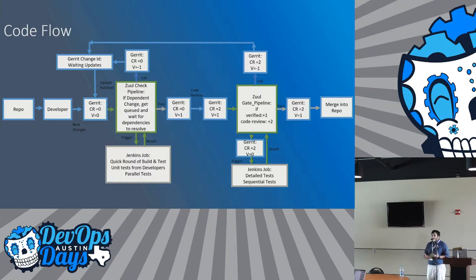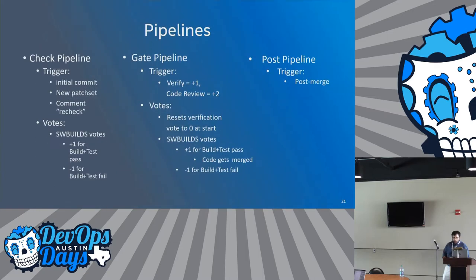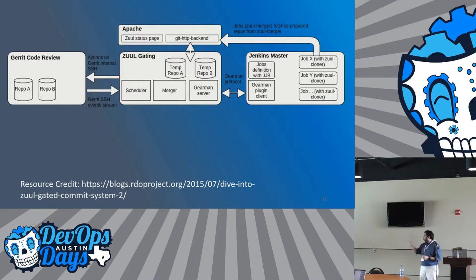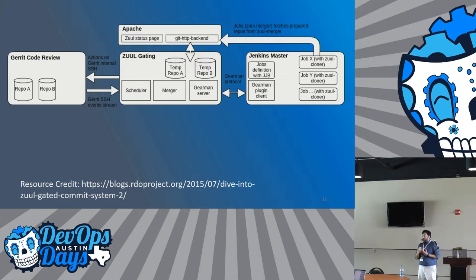Zuul helps you with dependency handling but doesn't cover everything. What it basically does — illustrated in a tutorial from the RDO project if you Google Zuul — is it makes a clone of your repo from Gerrit and merges the required changes. If you have changes in multiple repositories, repo A and repo B, that need to be tested together, it creates repositories for both, merges the code into them, and makes it available for your jobs to build and execute.